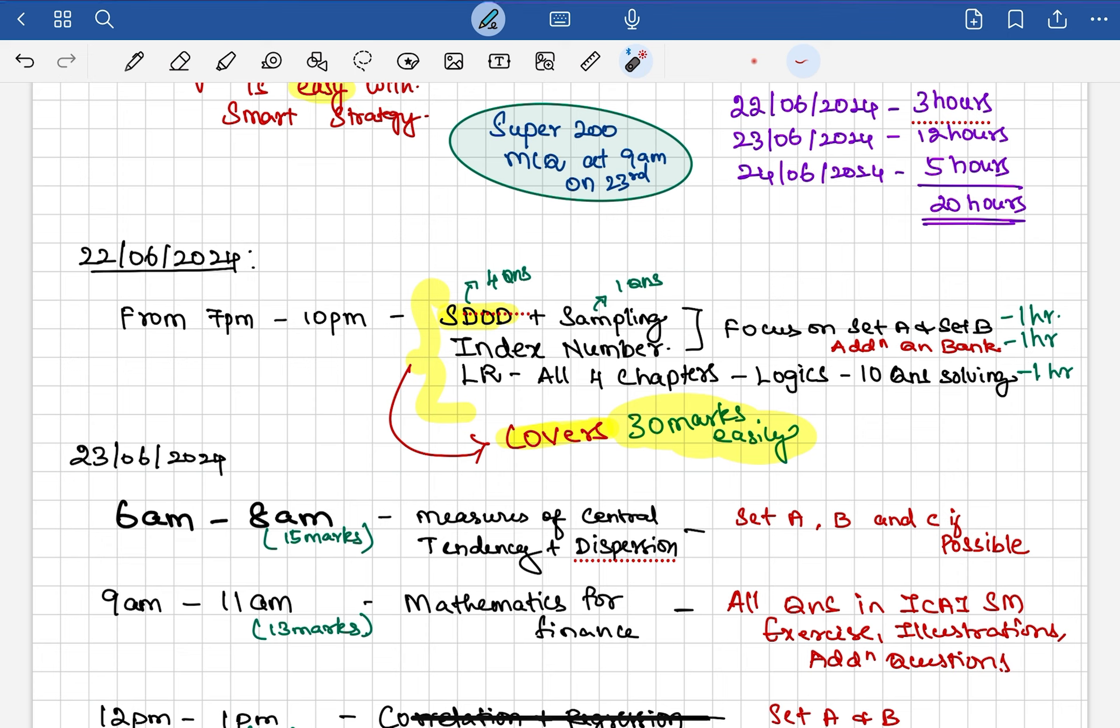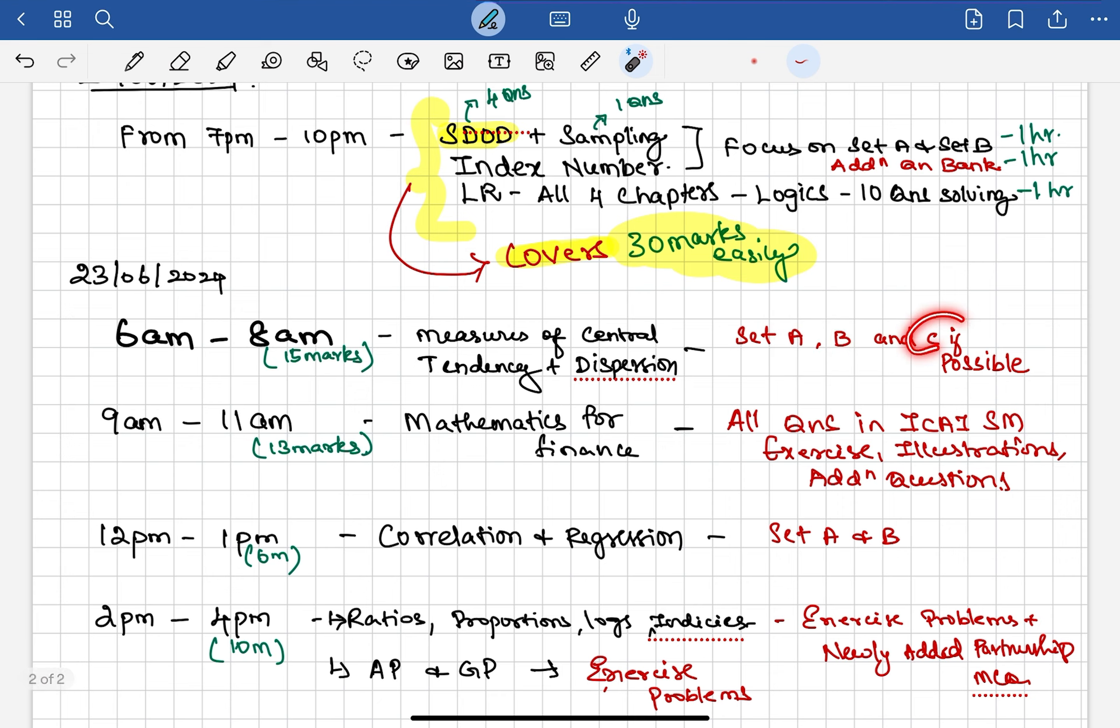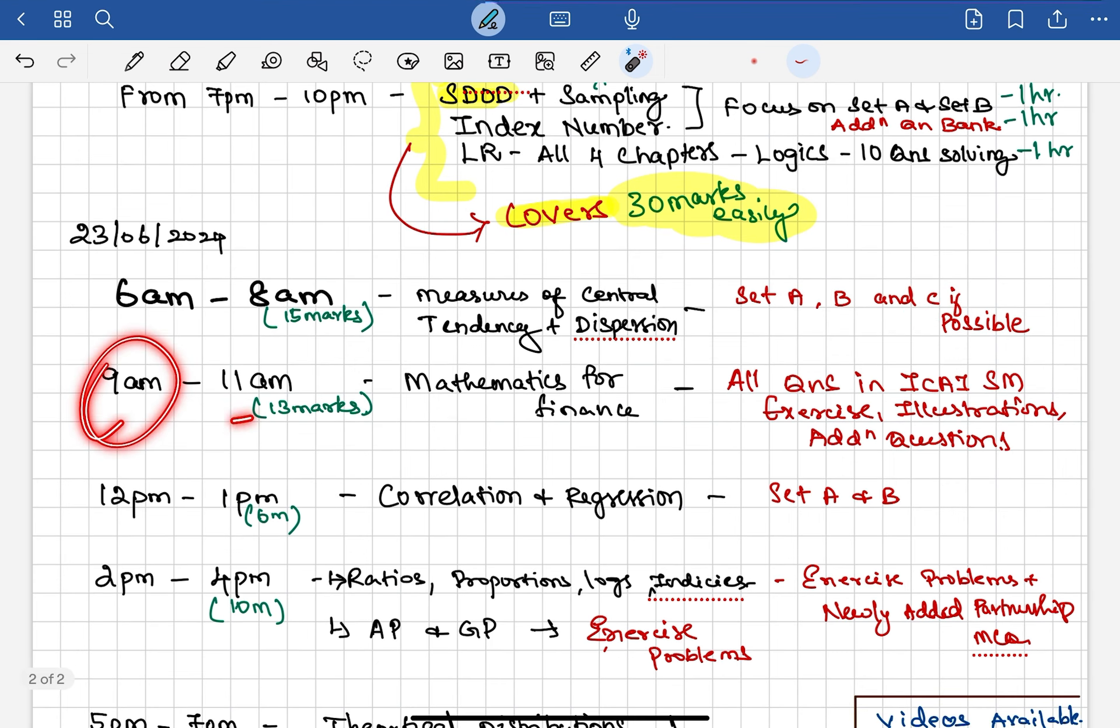On the next day morning, wake up at 5:30 or 6 AM, refresh, and start with the marquee chapter: Measures of Central Tendency and Dispersion, which gives you 15 marks. With a good mindset, focus on Set A, Set B, and then Set C if possible. From 9 AM, take a one-hour break. From 9 AM to 11 AM, focus on the next marquee chapter, Mathematics for Finance. Do all the questions in ICAI study material, all excess problems, all illustration problems, along with additional questions—10 to 12 questions—you need to focus.